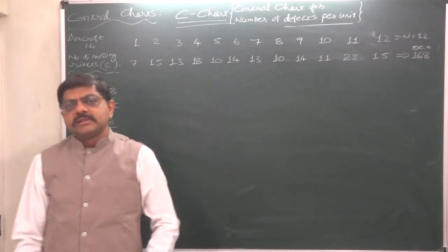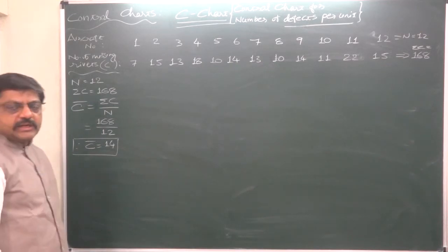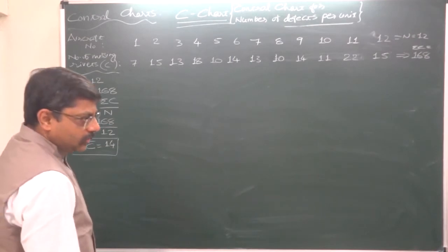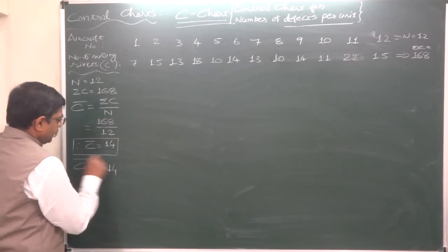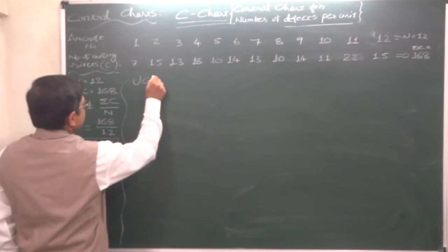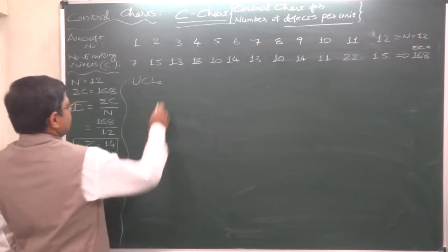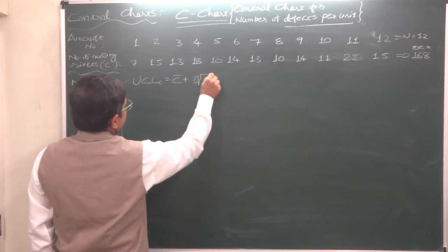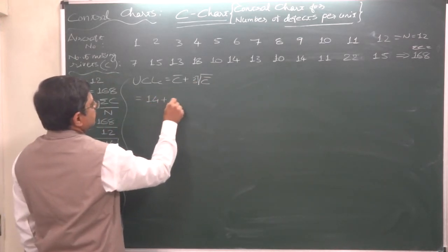In this particular study, on an average, 14 rivets are missing per aircraft. Now before drawing the control chart, we need to calculate the upper control limit, lower control limit, etc. As usual, this mean itself becomes the central line. Upper control limit for this control chart is so much easy to calculate. Upper control limit is C bar plus 3 into under root C bar.